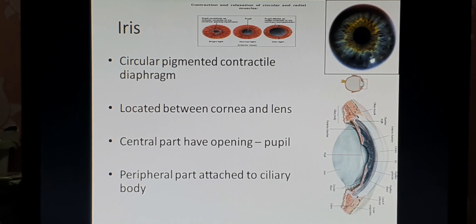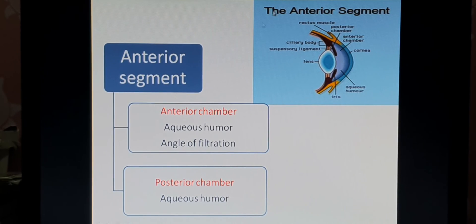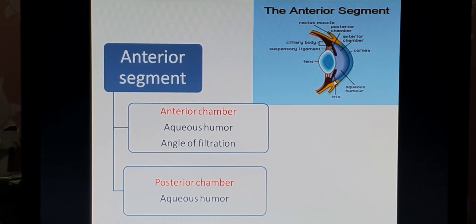The iris is a circular curtain-like structure which lies between the cornea and the lens. It separates the anterior segment into the anterior chamber and the posterior chamber. The central part of the iris has an opening called the pupil, and the peripheral part is attached to the ciliary body. The junction of the iris and cornea is called the irido-corneal junction, also known as the angle of filtration, where the aqueous humor is filtered.